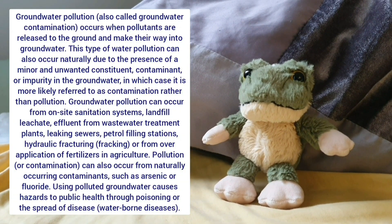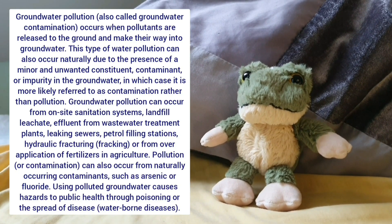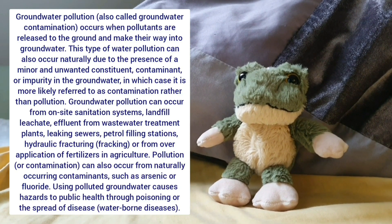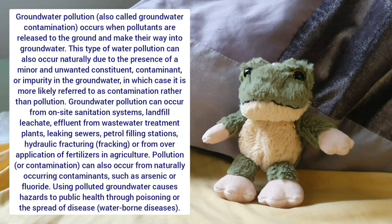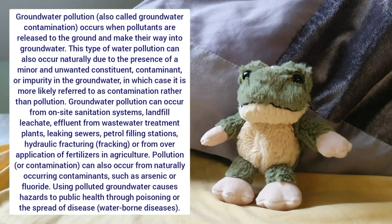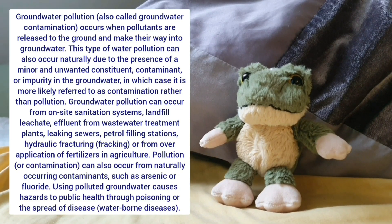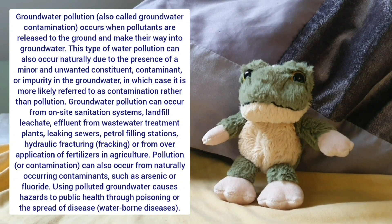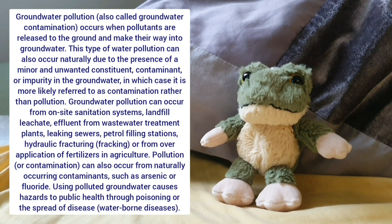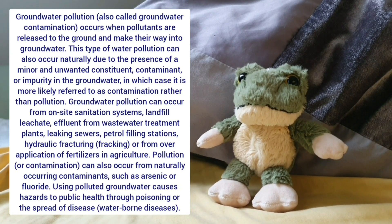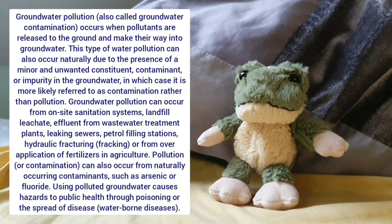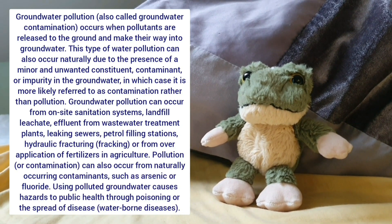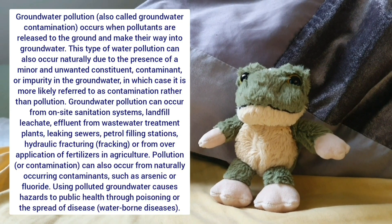Groundwater pollution, also called groundwater contamination, occurs when pollutants are released to the ground and make their way into groundwater. This type of pollution can also occur naturally due to the presence of an unwanted contaminant or impurity in the groundwater, in which case it is more likely referred to as contamination rather than pollution. Groundwater pollution can occur from on-site sanitation systems, landfill leachate, effluent from wastewater treatment plants, leaking sewers, petrol filling stations, hydraulic fracturing (fracking), over-application of fertilizers in agriculture, or naturally occurring contaminants such as arsenic or fluoride. Using polluted groundwater causes hazards to public health through poisoning or the spread of disease.